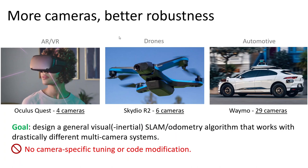Real-world vision systems often use multiple cameras for better robustness, such as AR/VR headsets, autonomous drones, and cars. However, adding more cameras greatly complicates the design of vision algorithms.